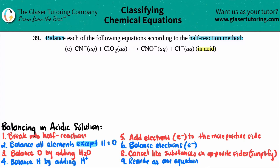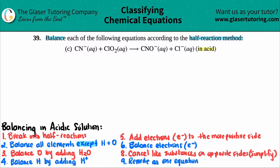I wrote down all of the steps that we have to memorize in order to balance something in acidic conditions. Please memorize this in the order that it's given — if you try to mess up the steps, it's not going to work out. There are nine steps. It may look intimidating, but I promise it's easier than it seems.